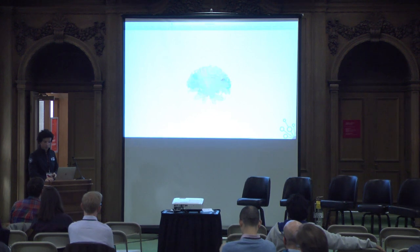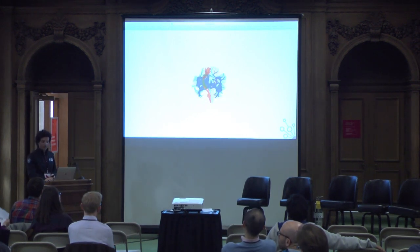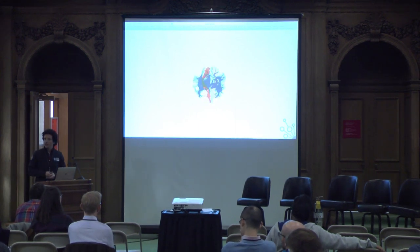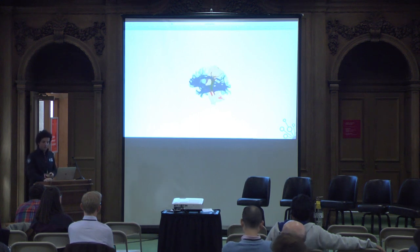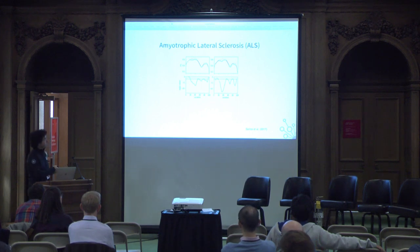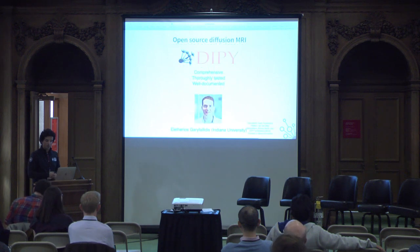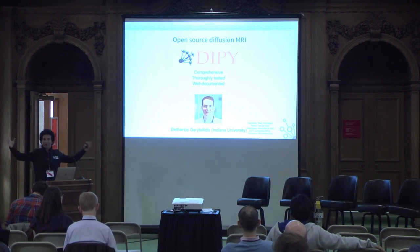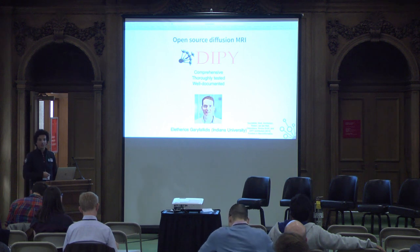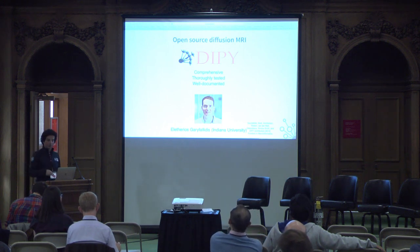We can focus on particular tracks like the corticospinal tracts on both sides connecting the brain to the spinal cord, controlling motor activity. In amyotrophic lateral sclerosis, ALS — Lou Gehrig's disease — patients have lower fractional anisotropy in parts of the corticospinal tract relative to healthy controls. So we can really look at the biology underlying a disorder using diffusion MRI. DiPy is a project focusing on open source diffusion MRI. Eleftherios Garyfallidis at Indiana University leads this project, and we've recently gotten NIH support to develop and disseminate it.